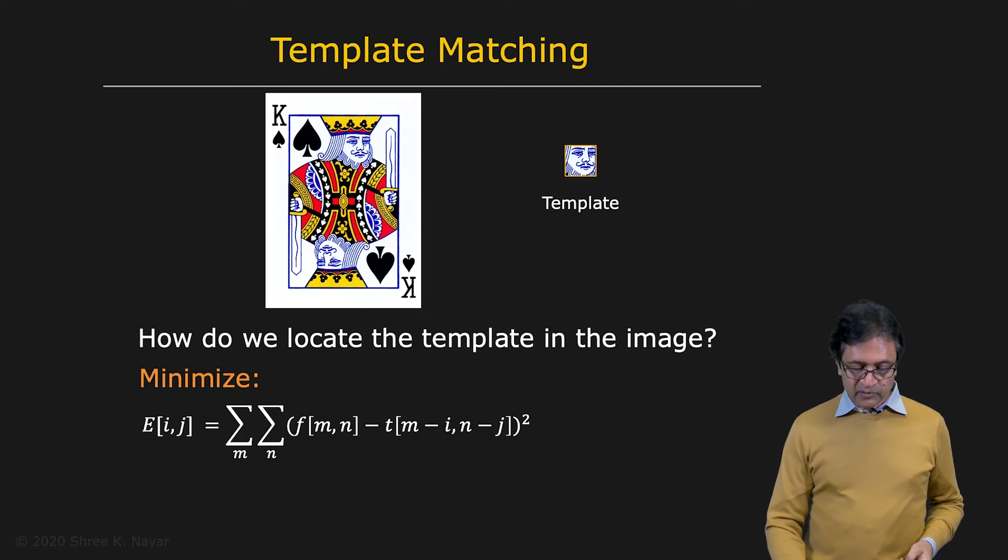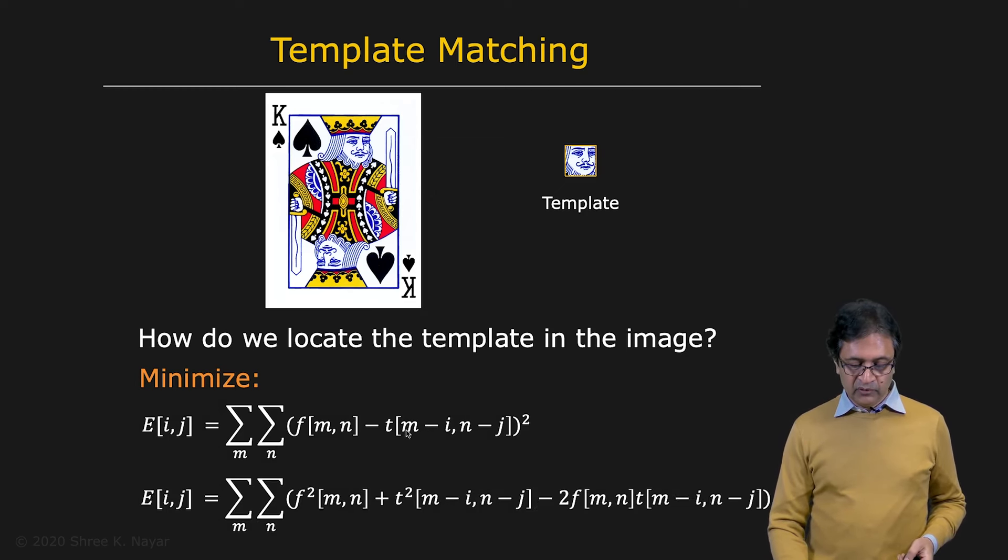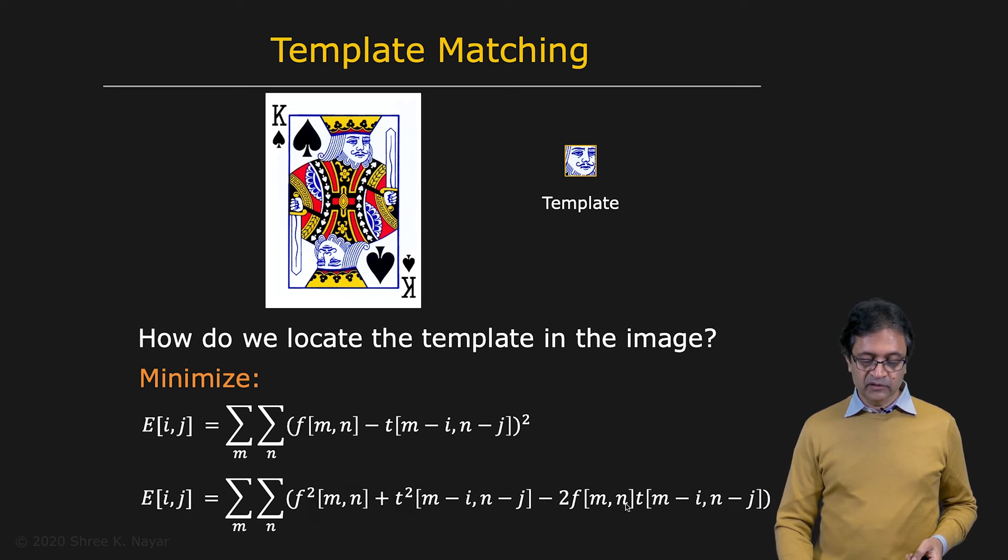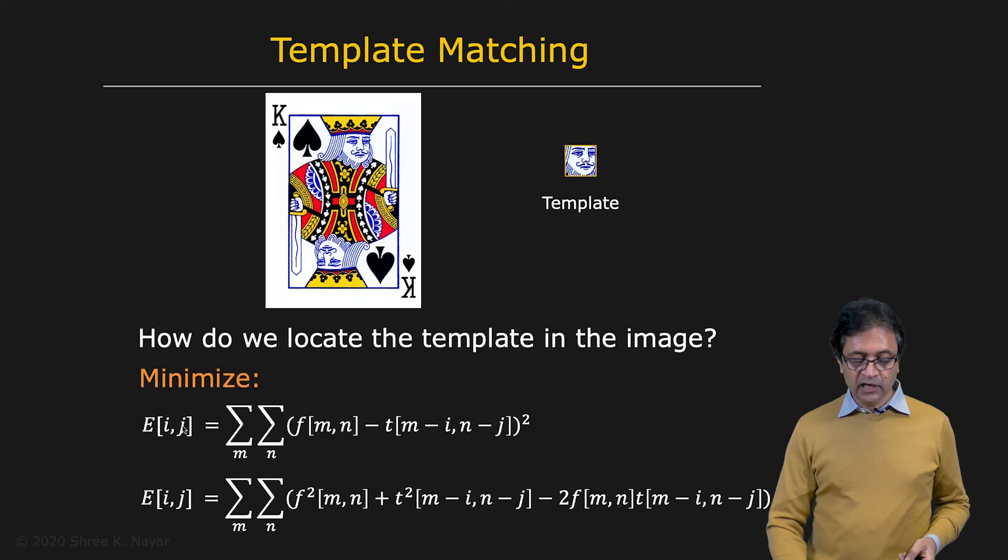So now we can expand this out. And what we would get is f squared t squared minus 2ft. Just expanded this out, the square right here. So minimizing this Eij is equivalent to maximizing this term right here.